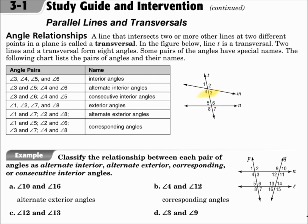The ones in between the two lines are called the interior angles — angles 3, 4, 5, and 6 are interior. Of the interior angles, the ones that are on opposite corners, like angle 3 and angle 5, or angle 4 and angle 6, are alternate interior angles. The interior angles that are on the same side are consecutive interior angles, like angle 3 and angle 6, or angle 4 and angle 5 — in between the two lines and on the same side of the transversal.